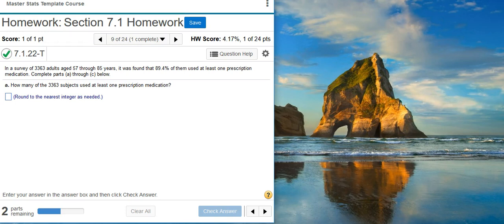Part A asks how many of the 3,363 subjects used at least one prescription medication. This is easily answered with the help of a calculator.